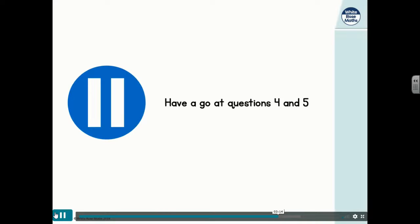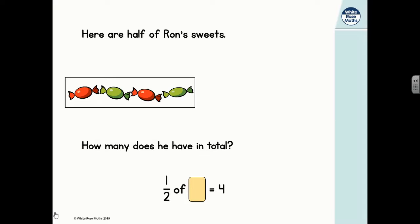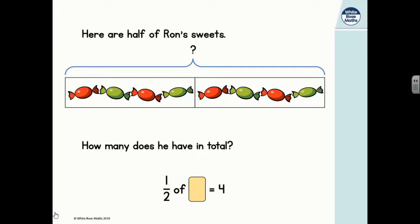Here are half of Ron's sweets. One, two, three, four. How many does he have in total? To work this out, we can put Ron's sweets into a bar model. We know half of his sweets are four and we want to know how many there are altogether. Our brace shows that we want to know how many there are altogether and our question mark is where our answer is going to go. Four make up half of Ron's sweets so we can put in another four to show the other half of Ron's sweets and clearly see that four plus four is equal to eight. Ron has eight sweets altogether.